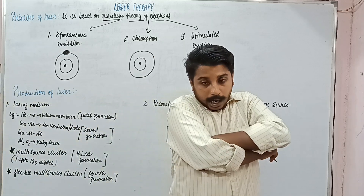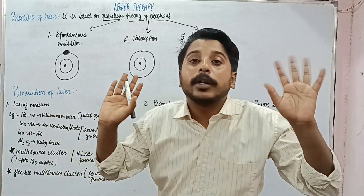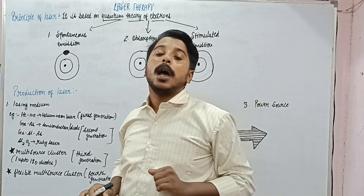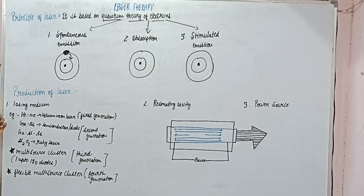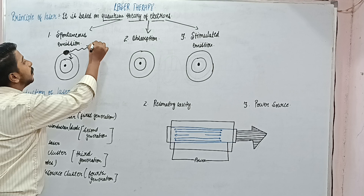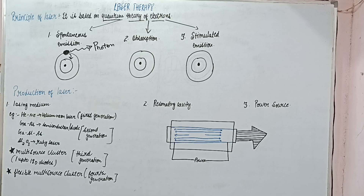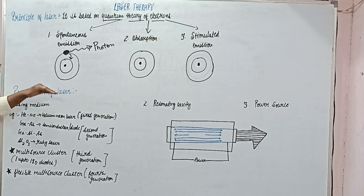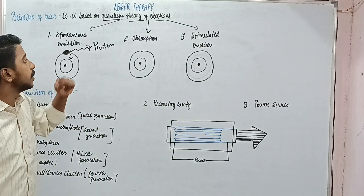The electron is in the higher energy level but wants stability, and stability is always at the lower level. So it will come down, and during this process it will release some energy in the form of a photon. This whole process is called spontaneous emission — because we did not stimulate this electron to come down; it itself came down and gave energy in the form of a photon.